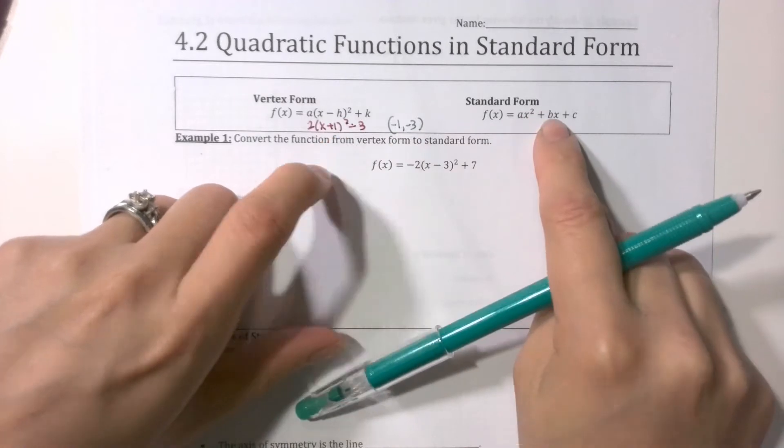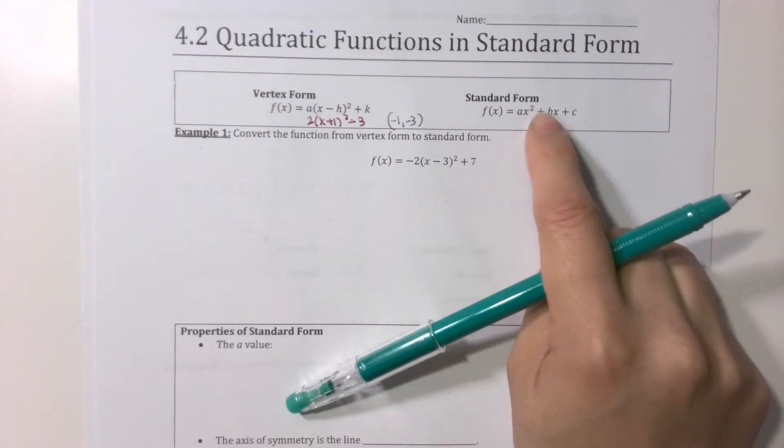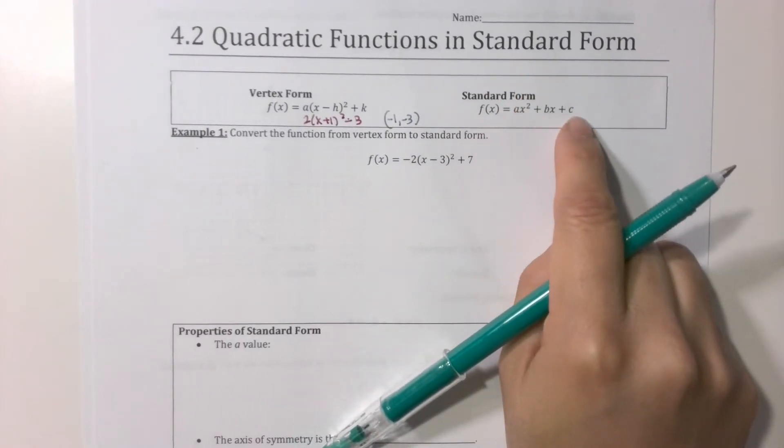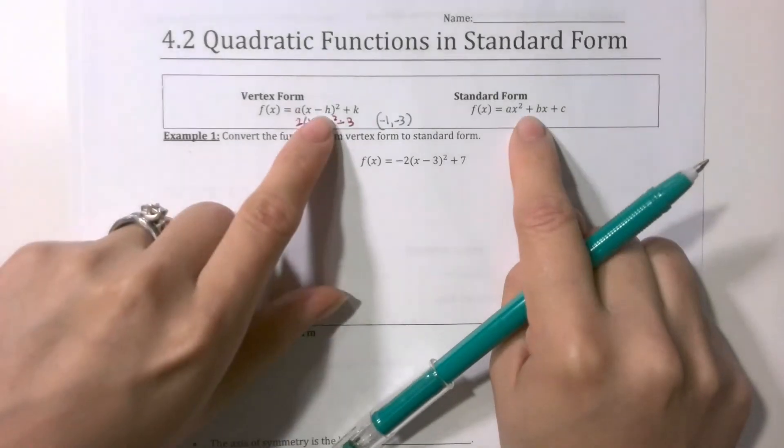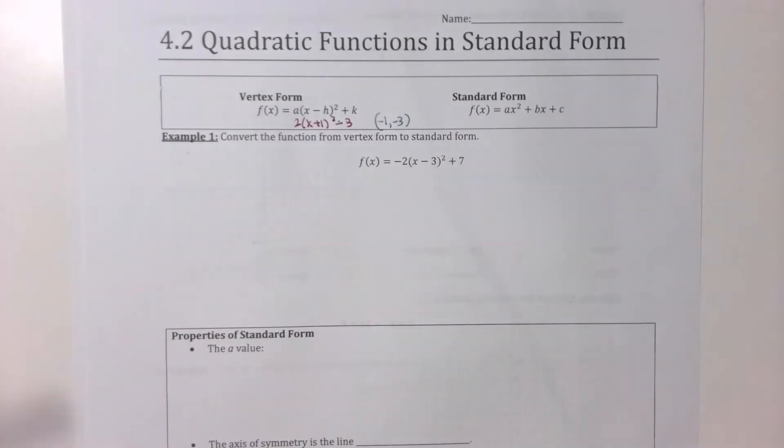However, sometimes the quadratic function might be given in what's called standard form that looks like this. It has a form of ax² + bx + c. Two different forms, but they both represent quadratic. So let's figure out what they are.